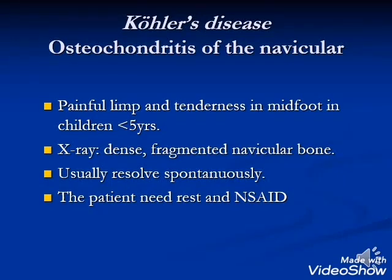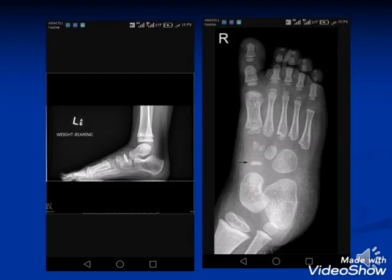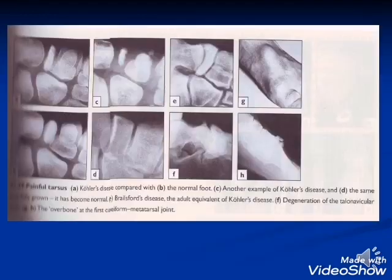Kohler disease: osteochondritis of the naviculum bone. It presents with a painful limp and tenderness in the mid-foot in children less than 5 years of age. X-ray shows dense fragmentation of the navicular bone. It usually resolves spontaneously; the patient needs rest and anti-inflammatory drugs. Imaging shows avascular necrosis and small size of the navicular bone.